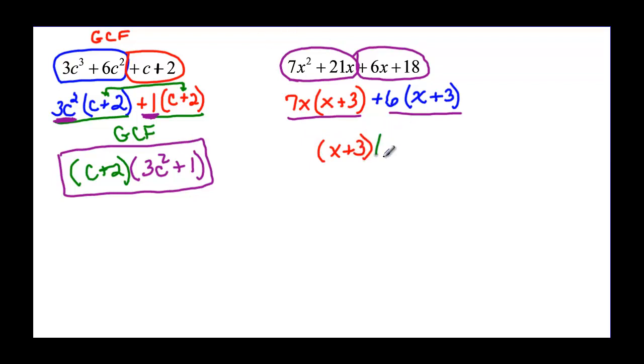And then the other factor, I've got the x + 3, so I need the 7x, and I've got the x + 3 on this term, but I still need the +6. So (x + 3)(7x + 6) would be my factored form, completely factored form.